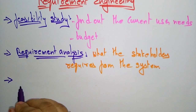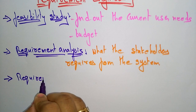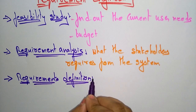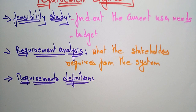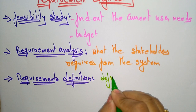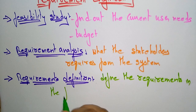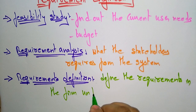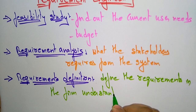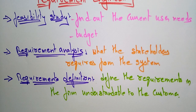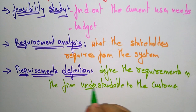Next is requirements definition. Requirements definition is nothing but it defines the requirements in a form understandable to the customer. The main aim here in requirements engineering is the requirement definition, so it has to give a clear-cut view about the project — what is going to be developed by taking the requirements from the customer.